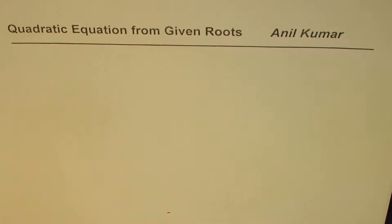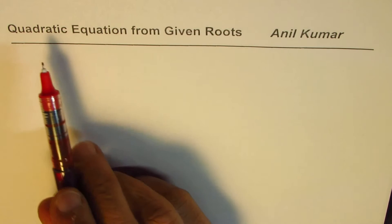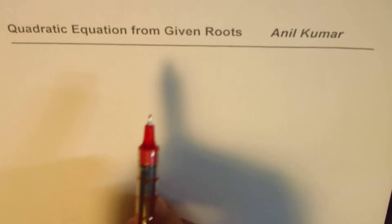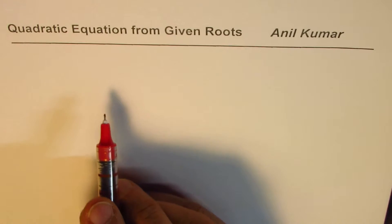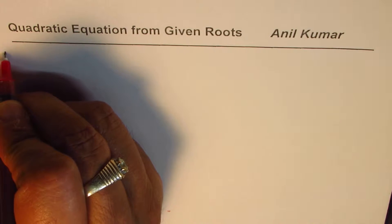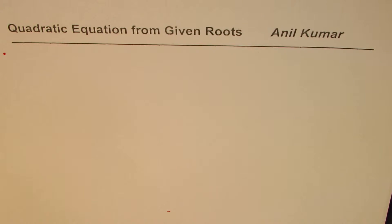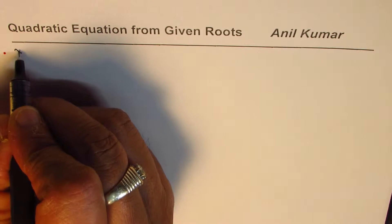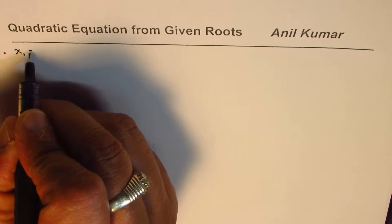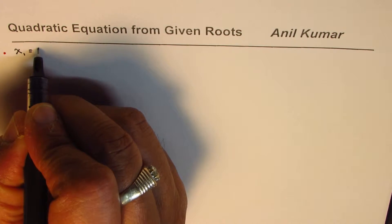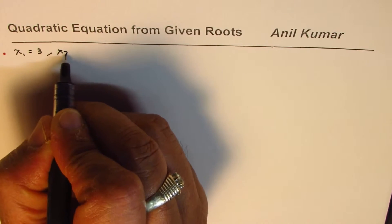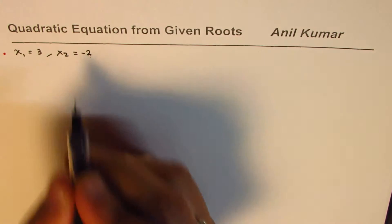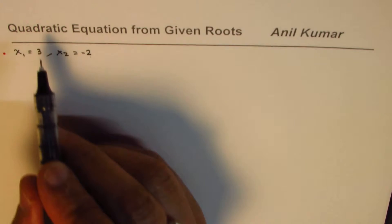I'm Anil Kumar and in this video we'll try to understand how to find the quadratic equation from given roots — that is to say, we'll work backwards. Let's begin by taking very simple examples. We'll write down the roots as x1 and x2. Let's say x1 is 3 and x2 is minus 2.